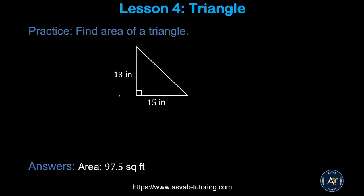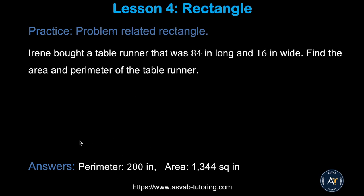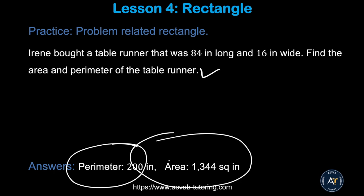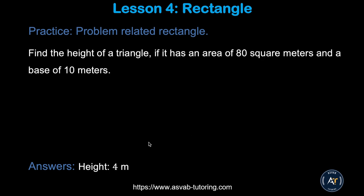This is another practice problem — pause the video and try by yourself. Make sure you get this answer. There is another practice problem where you have to find the area and perimeter of a table runner. Make sure you get perimeter equals 200 and area equals 1344 square inches. There is also a problem where you have to find height — make sure you get height equals 4.